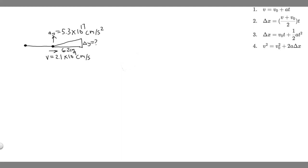In this problem, we're told an electron in a cathode ray tube is traveling horizontally at 2.1 times 10 to the 9 centimeters per second when a deflection plate gives it an upward acceleration of 5.3 times 10 to the 17 centimeters per second squared. Part A: how much time does it take for the electron to cover a horizontal distance of 6.2 centimeters? And Part B: what is its vertical displacement during this time?